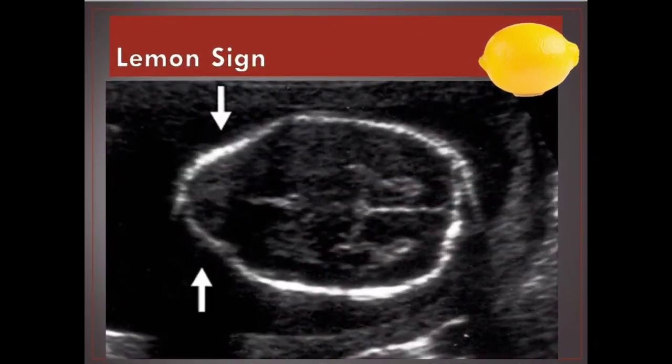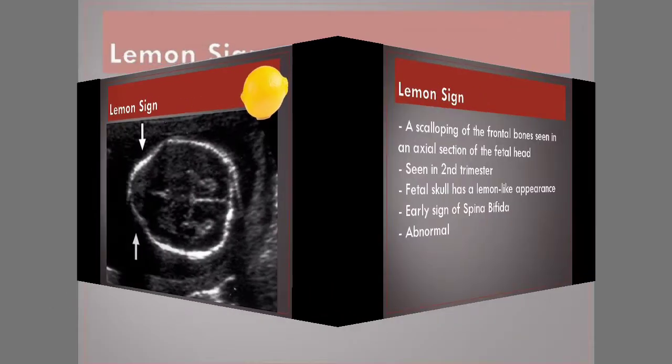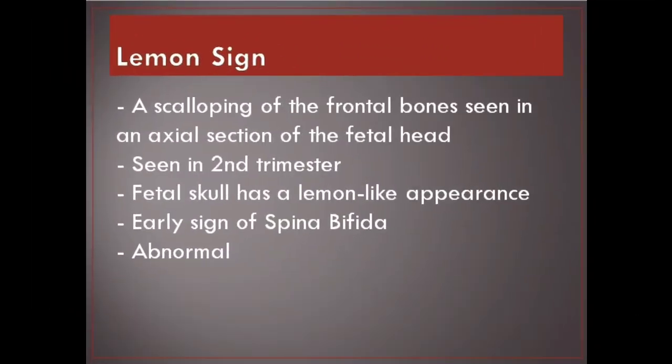Lemon sign. A scalloping of the frontal bones seen in an axial section of the fetal head. Seen in the second trimester, the fetal skull has a lemon-like appearance. This is an early sign of spina bifida. Abnormal.